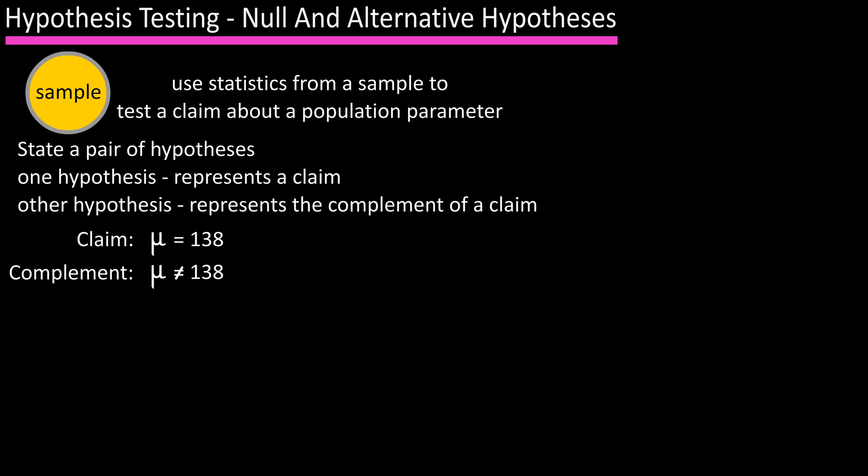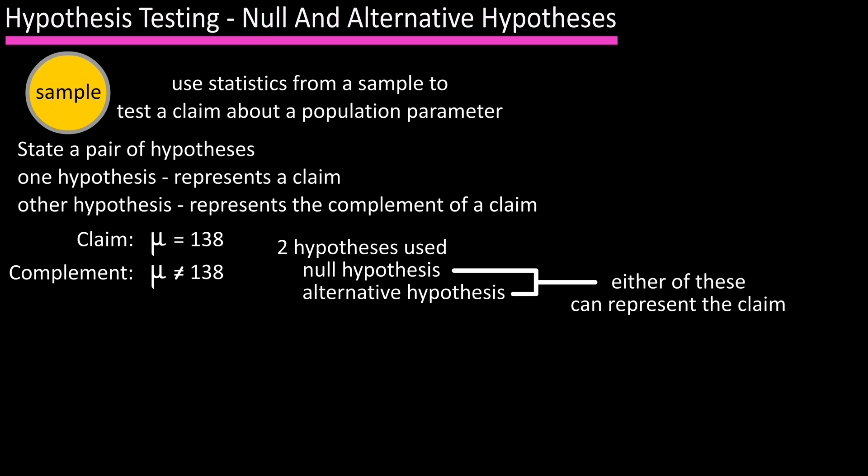The two hypotheses that we use are called the null hypothesis and the alternative hypothesis, and either of these may represent the claim. The next statement is very important to remember. The null hypothesis contains a mathematical statement of equality, which can be equal to, less than or equal to, or greater than or equal to.